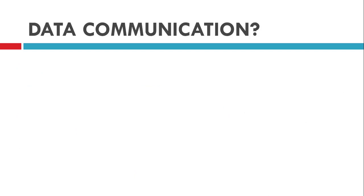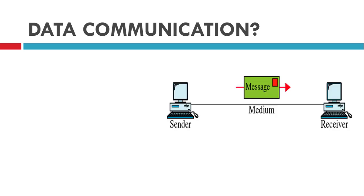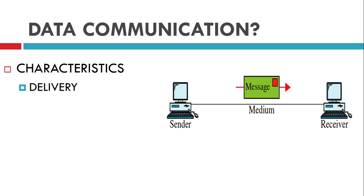Our next topic is data communication. Data communication is the transmission of a message between sender and receiver using some transmission medium, or you can say using some communication link. To make this communication effective, there are four characteristics. The first one is delivery — when a sender transmits a message to the receiver, it must be received by the exact receiver and must not be received by another device.